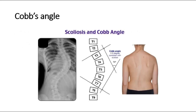To measure the Cobb angle, the upper and lower ends of the curve are identified as the levels where the vertebrae start to angle away from the curve. The degree of curvature is measured by drawing lines on the x-ray at the upper border of the uppermost vertebra and the lower border of the lowermost vertebra of the curve, as seen in this picture. The angle subtended by these lines is the angle of curvature, also known as the Cobb angle.